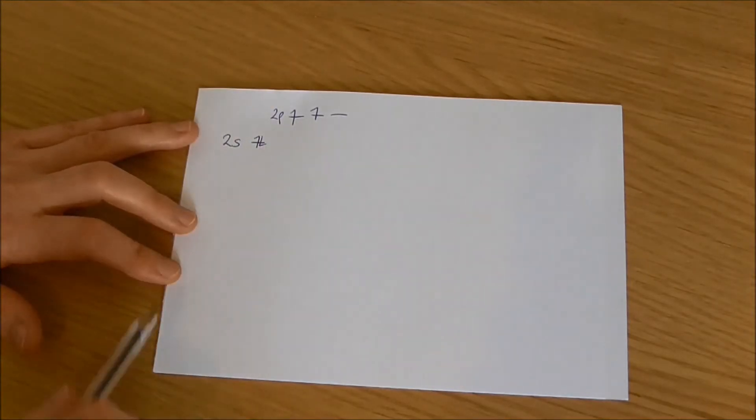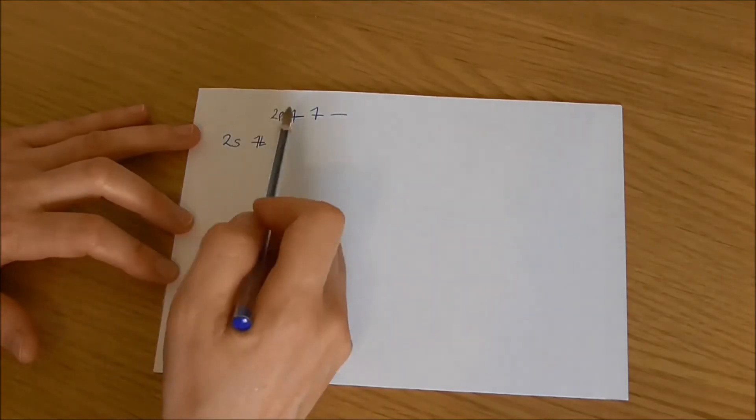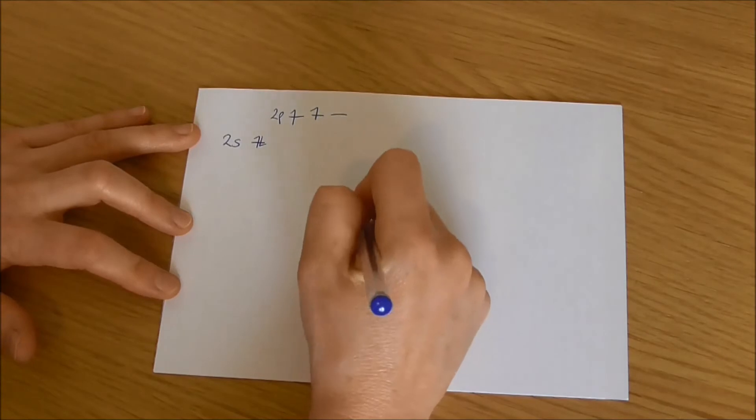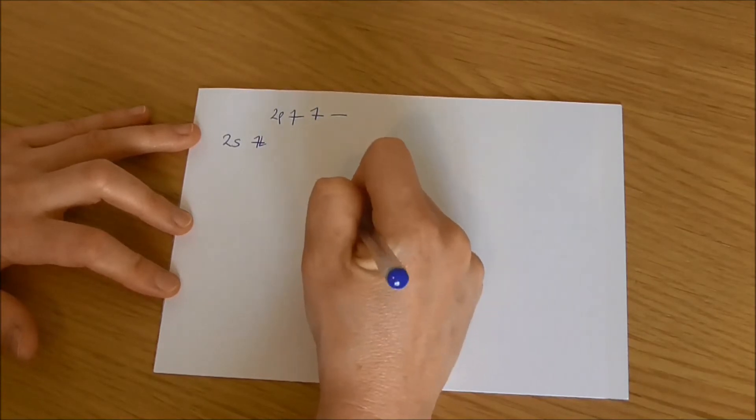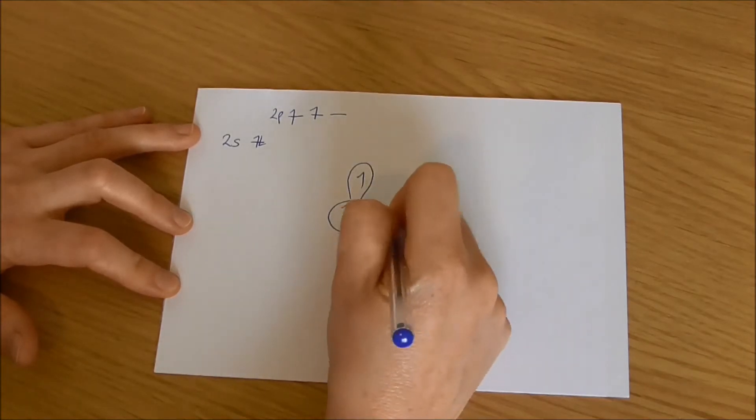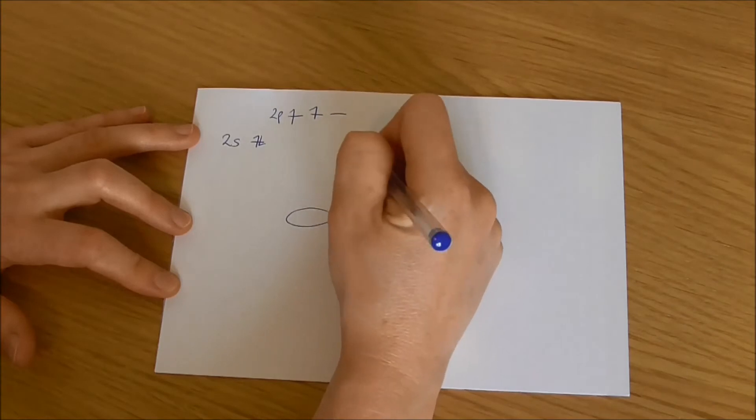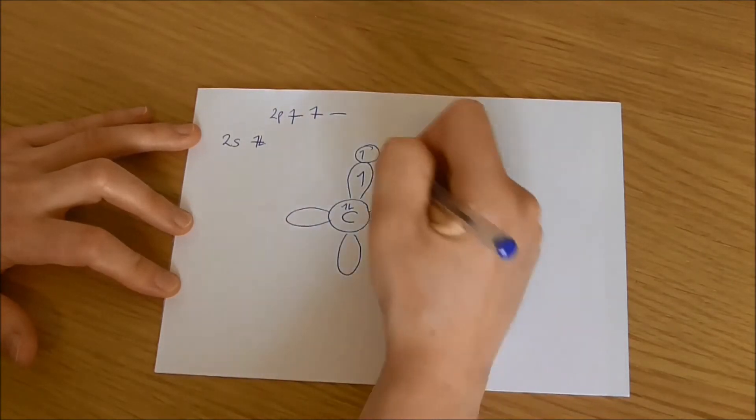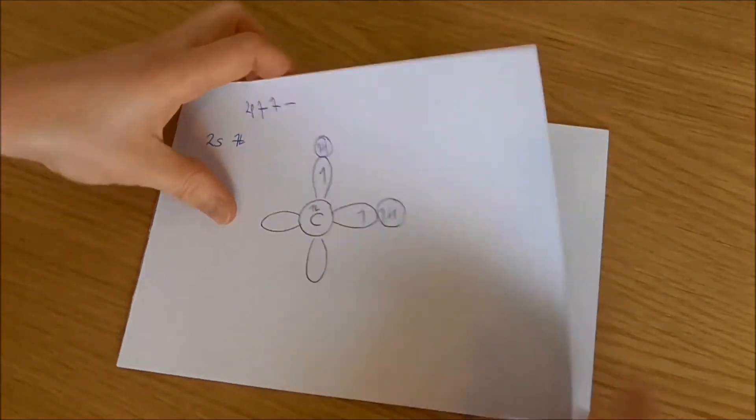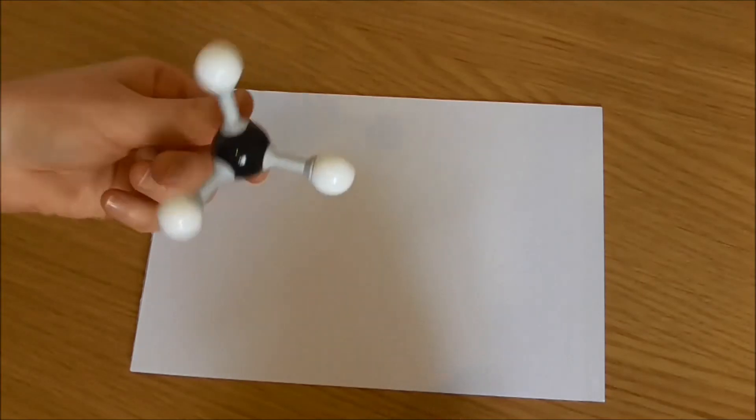Now if we look at that and think about how could carbon form bonds, just based on this ground state we can only actually form two bonds with the 2p orbitals because that carbon's sitting there with its 2s orbital filled, then it's got a 2p orbital that's got one electron and another 2p orbital that's got one electron. So in theory it should only form one bond here and one bond here, say with a hydrogen atom. But we know that doesn't happen.